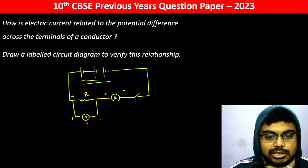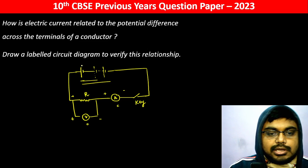This is the resistance R. The voltmeter and ammeter. यह होगा battery. Keep varying it.